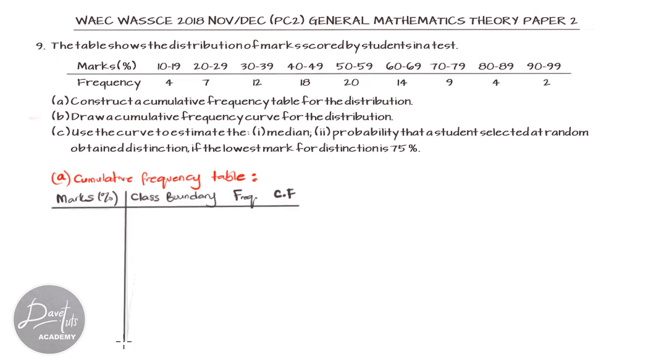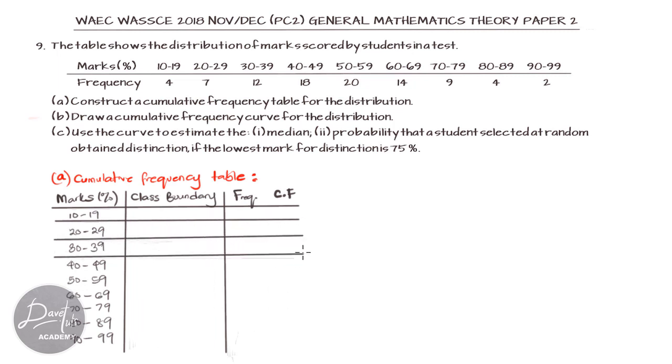If we go ahead and populate our table with the information given in the question, we have 10 to 19, 20 to 29, 30 to 39, 40 to 49, 50 to 59, all of these are the range of marks that were scored by the students, down to 90 to 99.